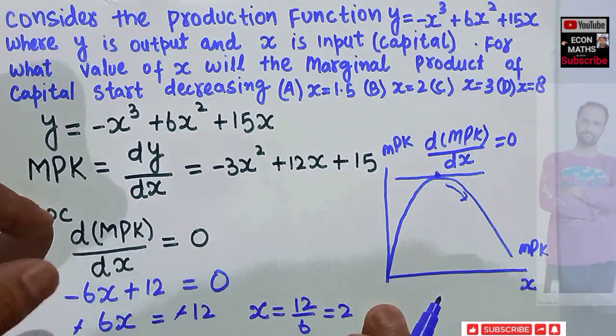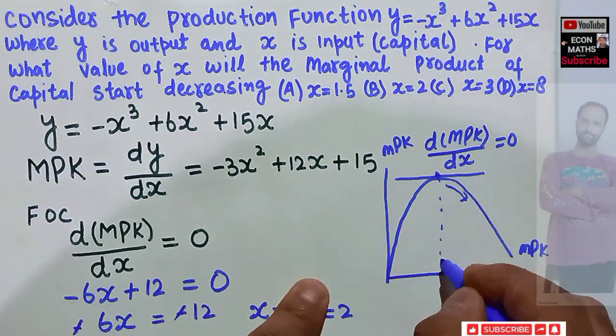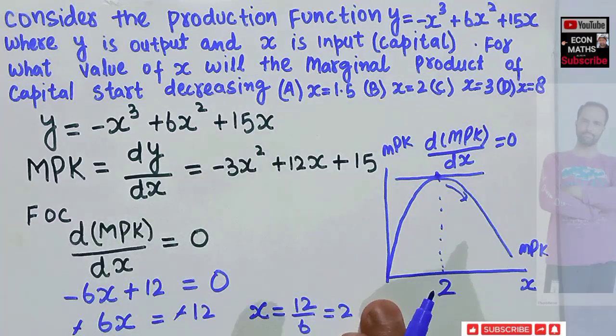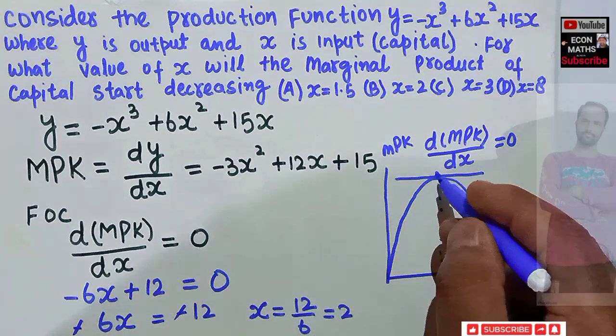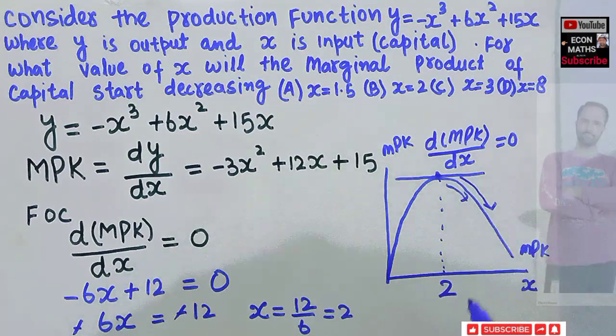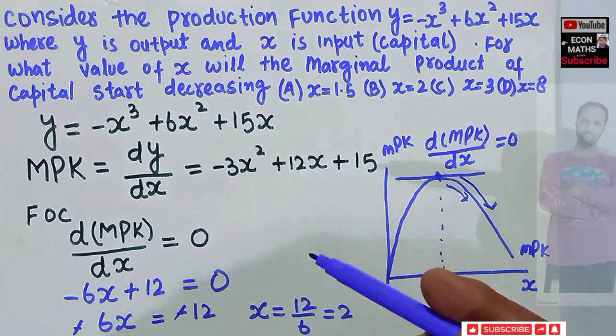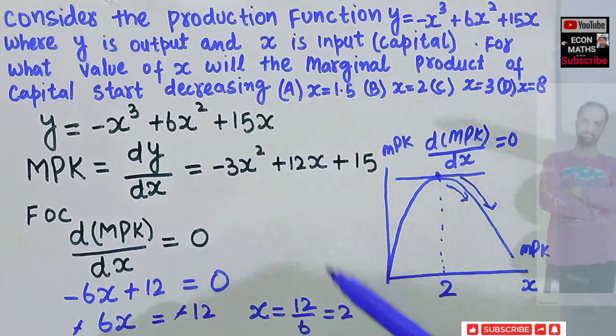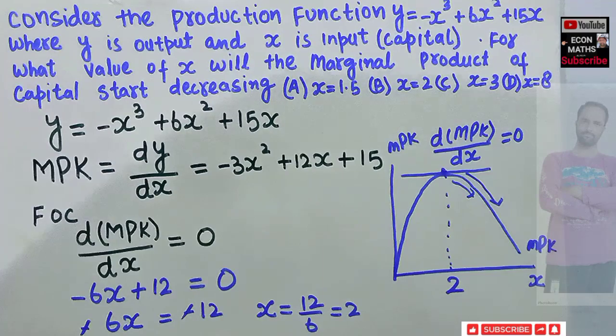So the thing is that when our capital is 2 units, our marginal product of capital is maximum and after that it starts diminishing. So the value of capital from which our marginal product of capital starts decreasing is 2. I hope I make myself clear in this video, thank you.